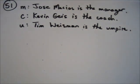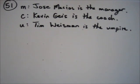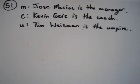Okay, this is problem 51 out of page 178. Our instructions are to determine whether the argument is valid or invalid, and we can compare the argument to a standard form or use the truth table to decide this.